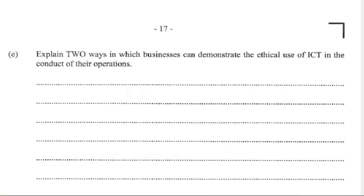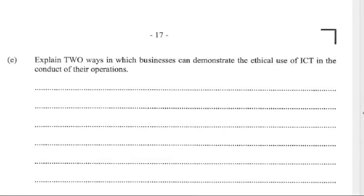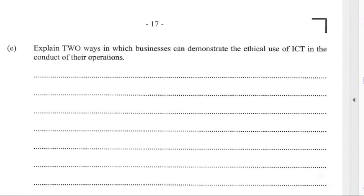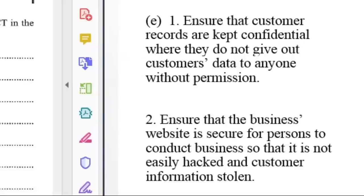E, explain two ways in which businesses can demonstrate the ethical use of ICT in the conduct of their operations. First, ensure that customer records are kept confidential where they do not give out customers' data to anyone without permission. Second, ensure that the business's website is secure for persons to conduct business so that it is not easily hacked and customer information stolen.